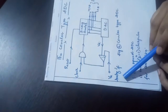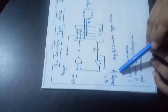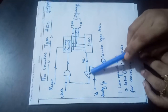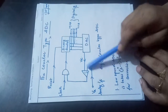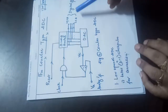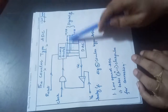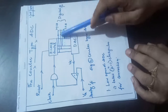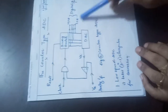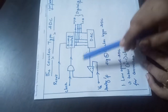Here the analog input voltage — our unknown input voltage — we are going to apply to the non-inverting terminal of the voltage comparator. Its equivalent digital output we are going to get here. This binary counter output is our digital output.